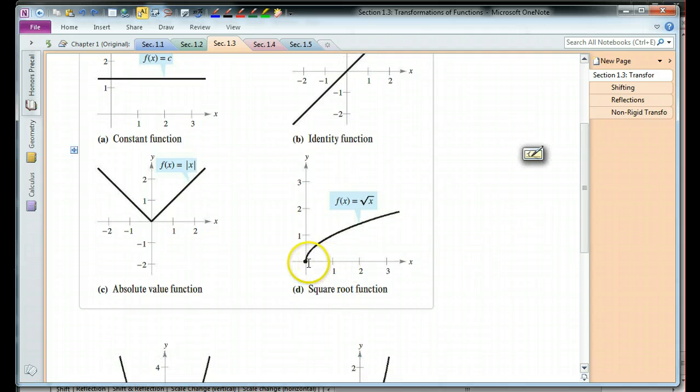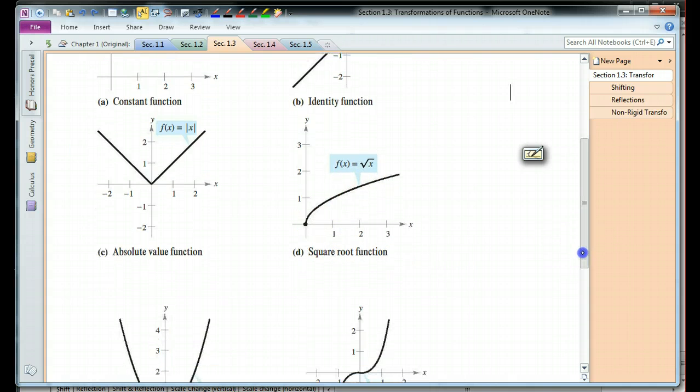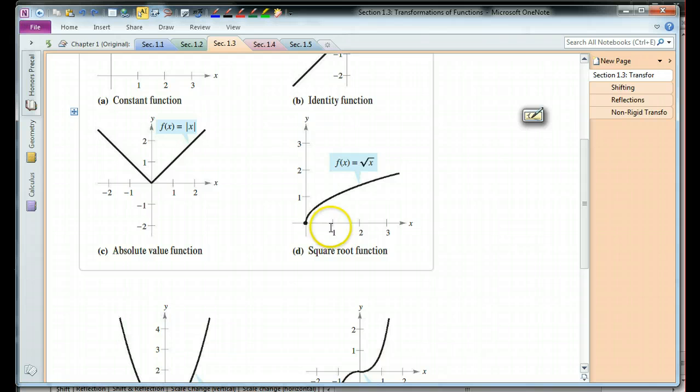The square root function has a domain greater than or equal to 0, and it's half of a sideways parabola. So we have points at 0, 0, 1, 1, 2, 2 root 2, 4, 2, etc.